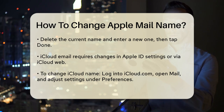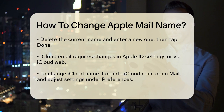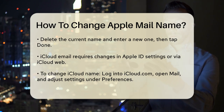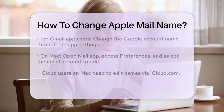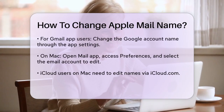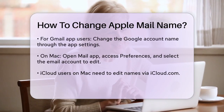Using the Gmail app: if you're using the Gmail app, you need to change your Google account name. Open Gmail, tap your profile picture, and then tap Manage your Google account. Go to Personal Info, tap Name, enter your new name, and tap Save.